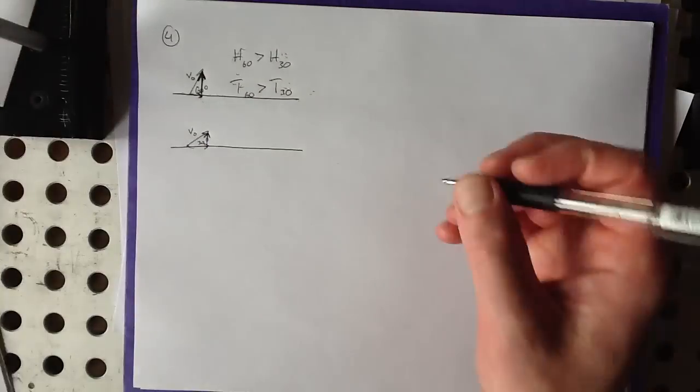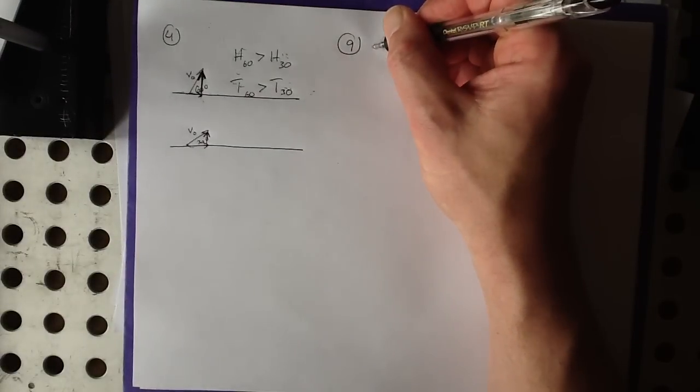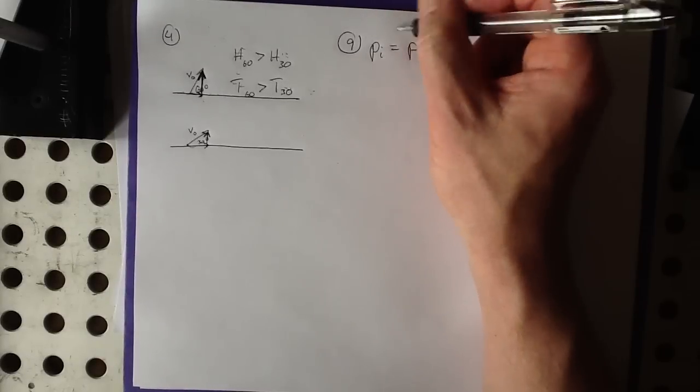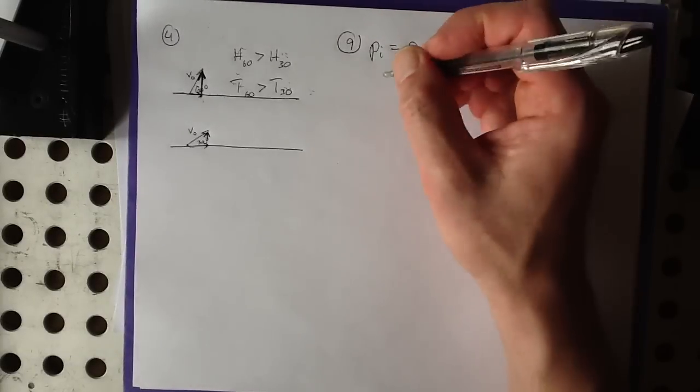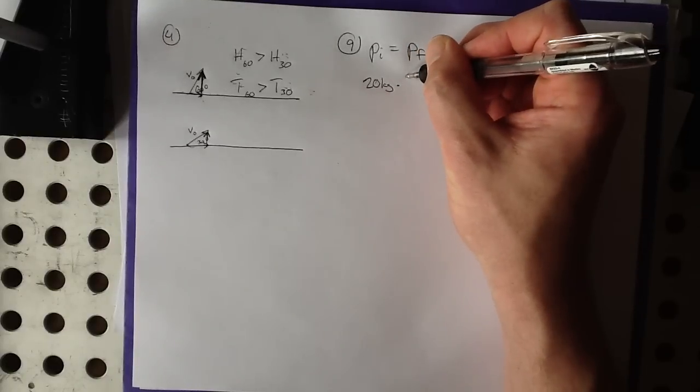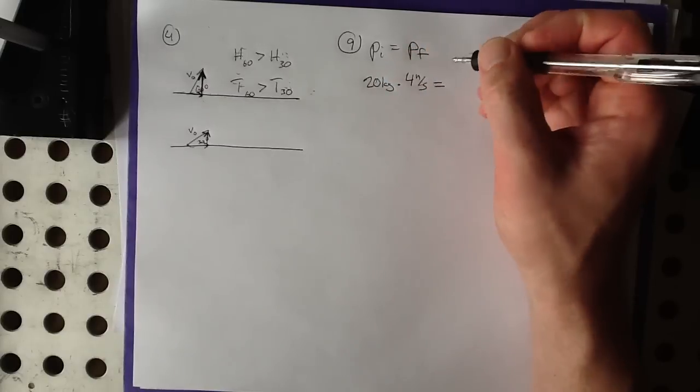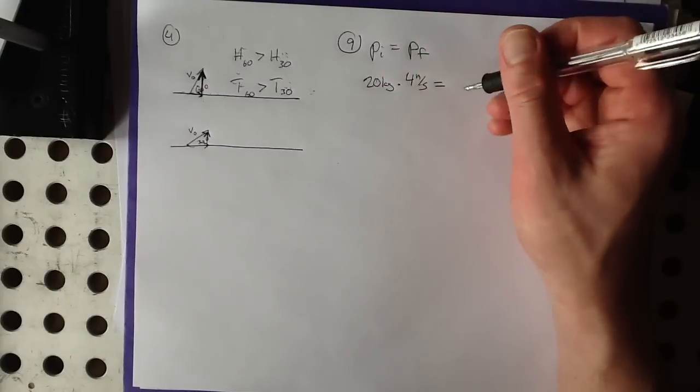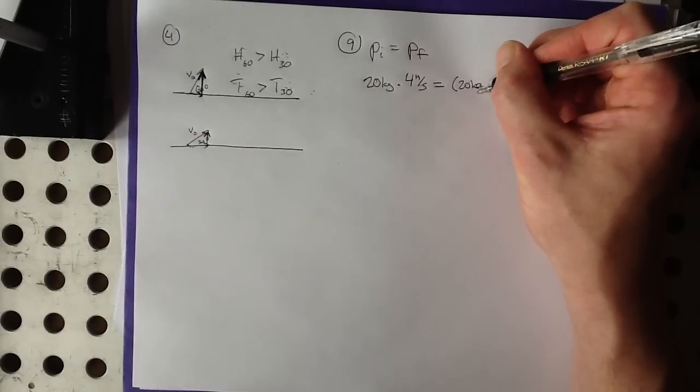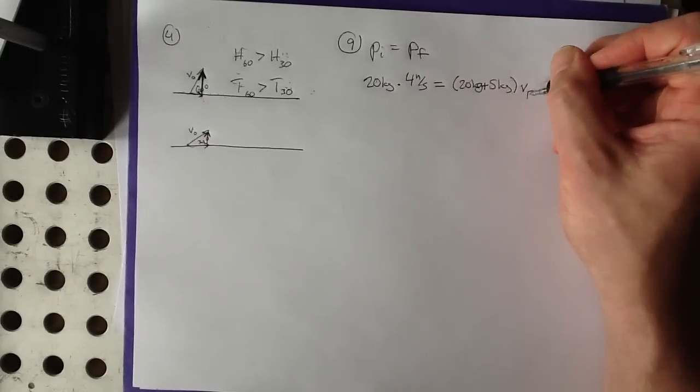This is a conservation of momentum question. So we need to remember that in number 9 here, the initial momentum must be equal to the final momentum of everything involved in the collision. So before the jump, the only thing that's moving is the child. And she is running at 4 meters per second. So mass times velocity, and that's it. The sled's not moving. So then afterwards, they stick together.